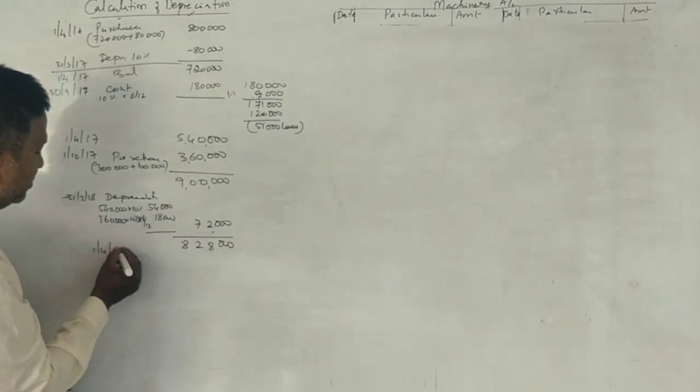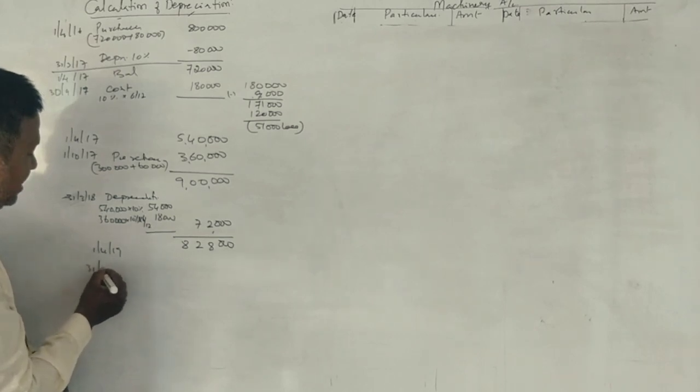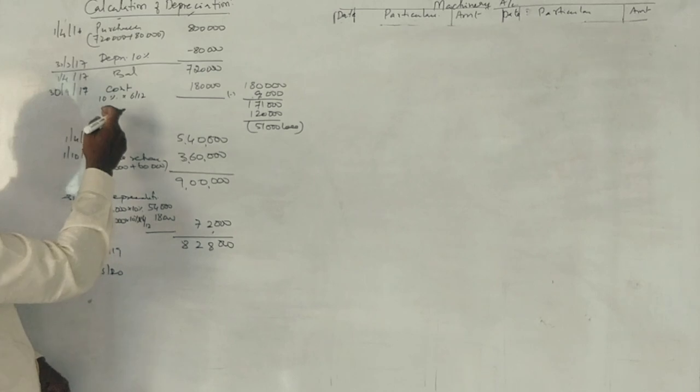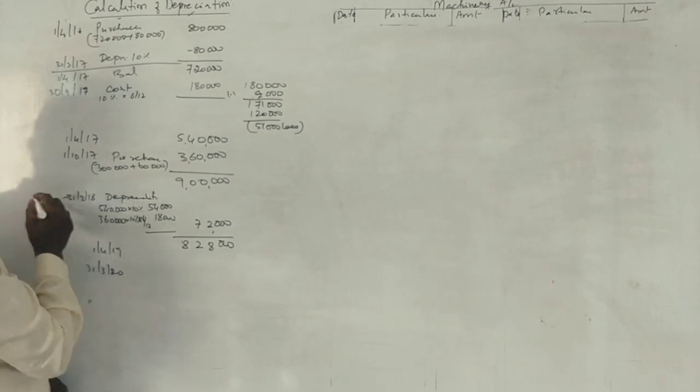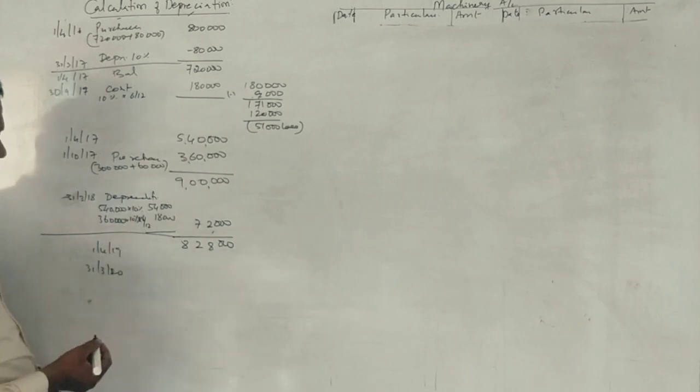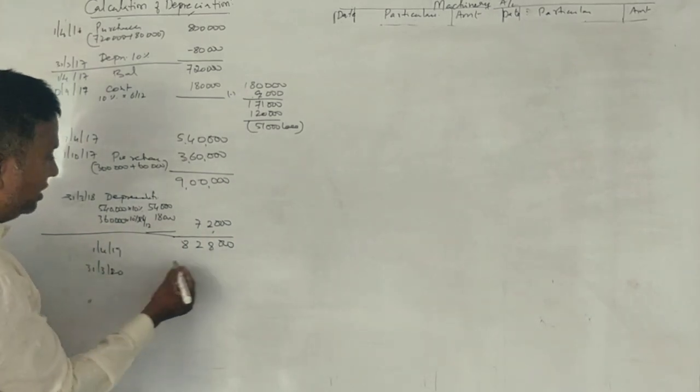This is 1st April 2019. 31st March 2020, the third year. Balance for 2018-2020. The third year here 10%.